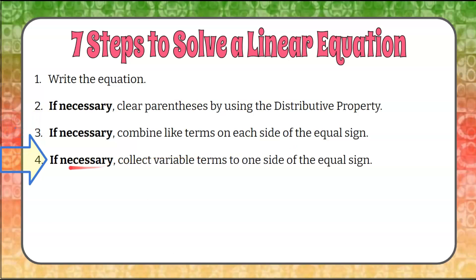Step four: if necessary, we're going to collect variable terms to one side of the equal sign. We'll look to see if there's a variable term on the left and on the right, and if so, we'll decide to collect them either to the left or to the right using inverse operations.